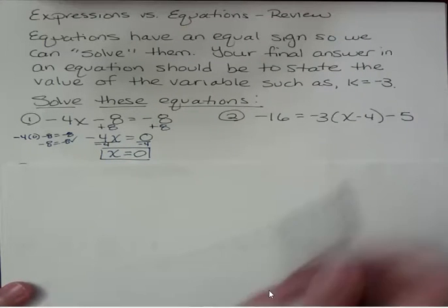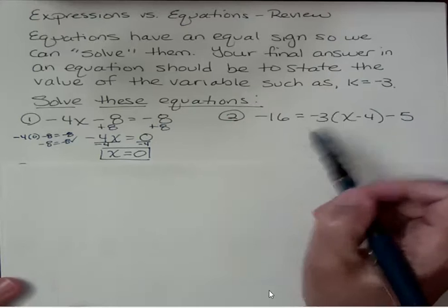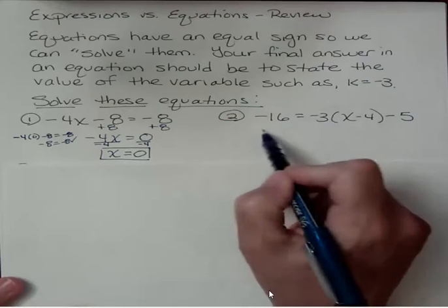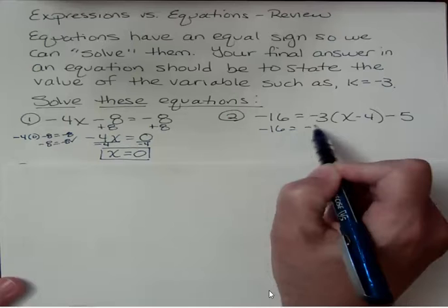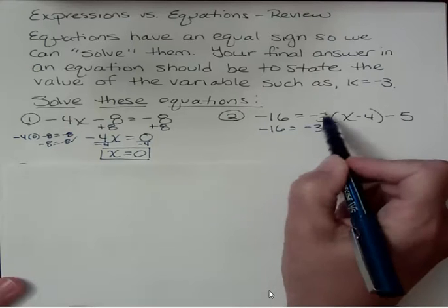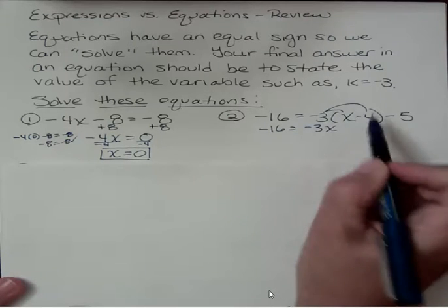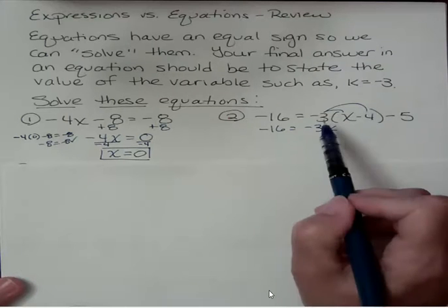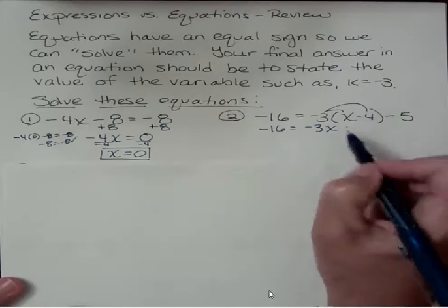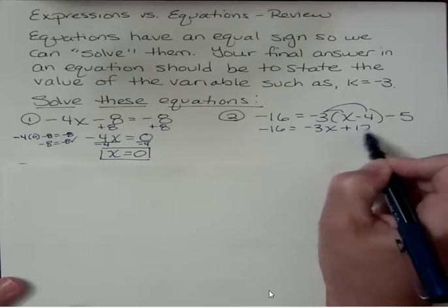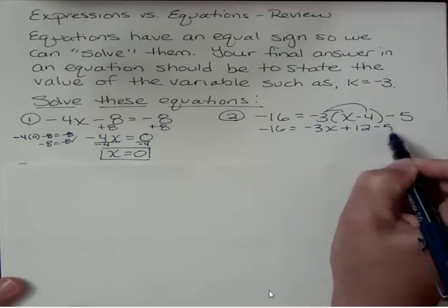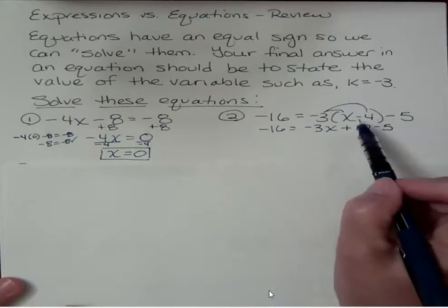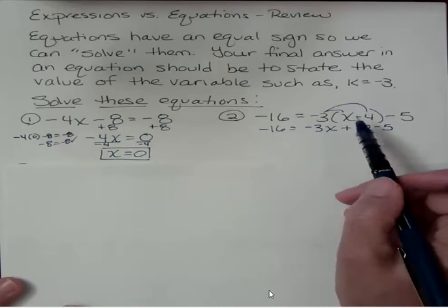For number 2, we want to get rid of the parentheses by distributing. So we take negative 3 times x and then negative 3 times negative 4. Negative 3 times minus 4. Those negative and minus meaning the same. So negative negative makes that a positive 12 and then minus 5. So again, if you're struggling with why is that sometimes a negative and sometimes a subtraction, it's both.